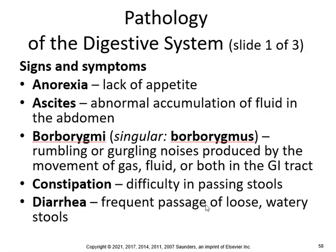Constipation, difficulty in passing stools. Diarrhea is frequent passage of loose stool. You might want to look up signs and symptoms between ascites, borborygmas, constipation, diarrhea, dysphagia, flatulence, hematochezia, and jaundice — these are just things that you might want to look up.